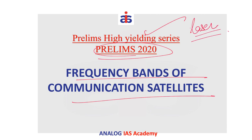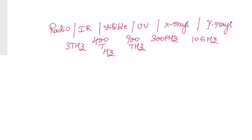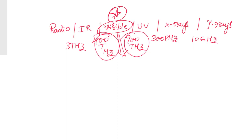Radio waves are one part of the electromagnetic spectrum. These are the various components of the electromagnetic spectrum, and most of the light we see is due to visible spectrum wavelengths — the frequency range for visible light is between 400 terahertz and 900 terahertz. However, the key takeaway is that most communication between satellites happens in the radio frequency range only.